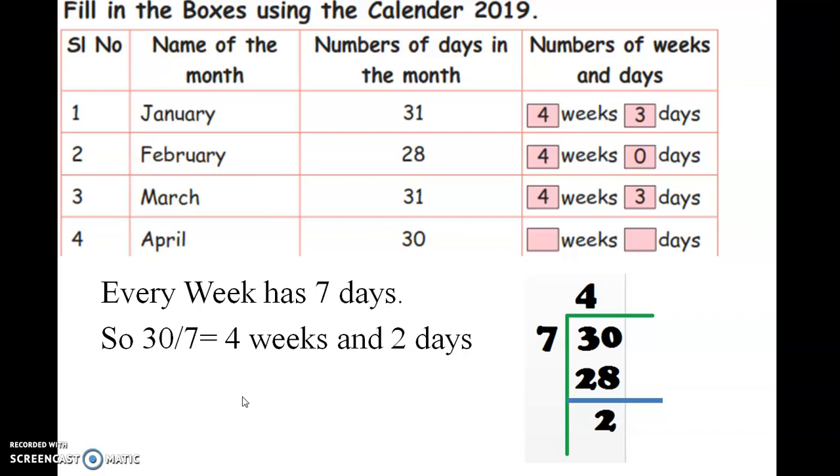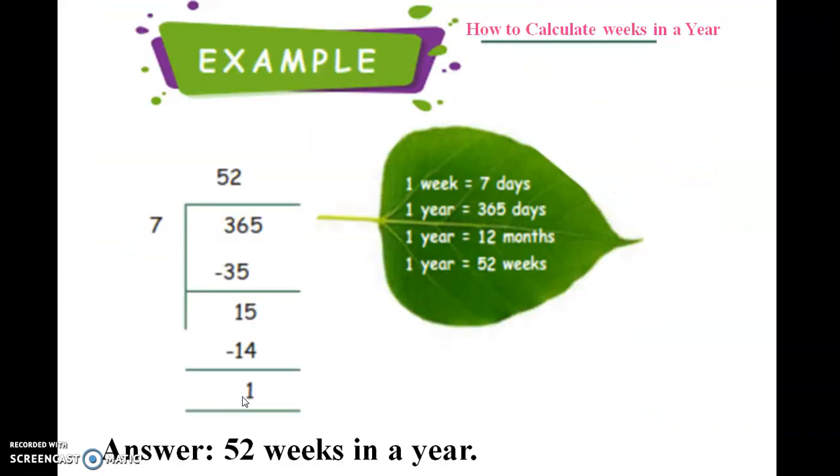Where 4 is quotient and 2 is remainder. Similarly for a year, divide 365 by 7, which gives 52 quotient and 1 day. So 52 weeks in a year and 1 day. 1 week equals 7 days. 1 year equals 365 days, 12 months, or 52 weeks.